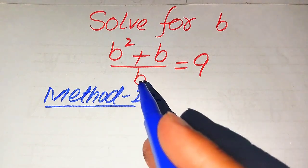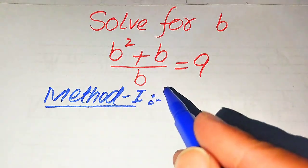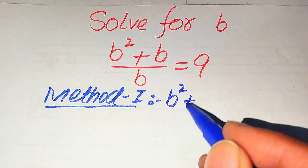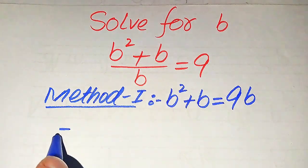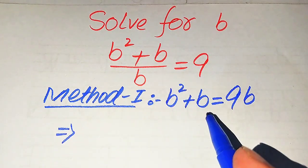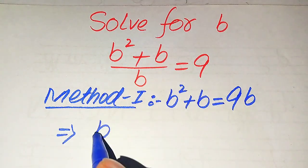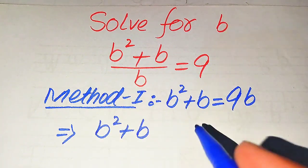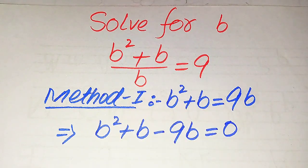In the first method, b is in the denominator on the left-hand side, so we need to move it to the right-hand side. When we move it, it multiplies by 9, and after moving it to the right-hand side it will be written as b squared plus b equals 9b. In the next step, we move 9b to the left-hand side, giving us b squared plus b minus 9b equals 0.